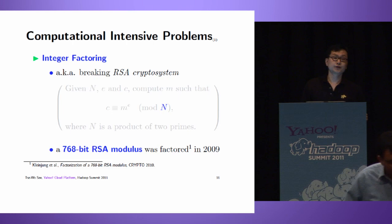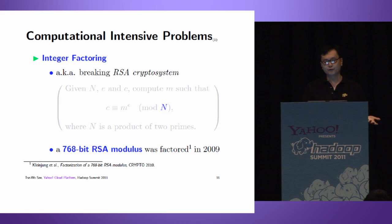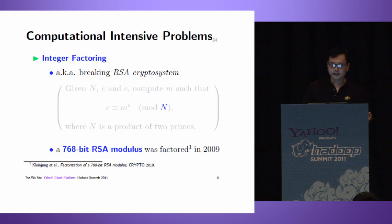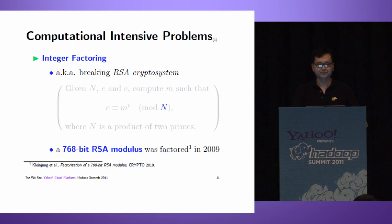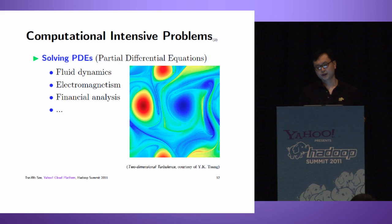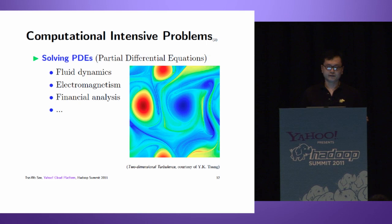What are mathematicians interested in? One popular problem is integer factoring - if we can do integer factoring, we can break RSA cryptosystems. In 2009, a 768-bit RSA modulus was factored. We're also interested in solving partial differential equations with applications in fluid dynamics, electromagnetics, and financial analysis.